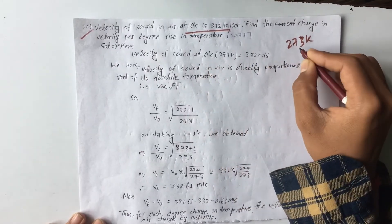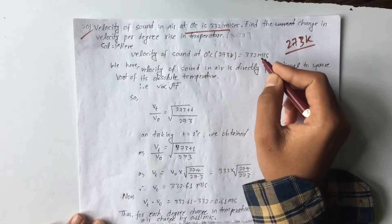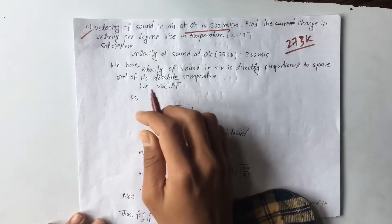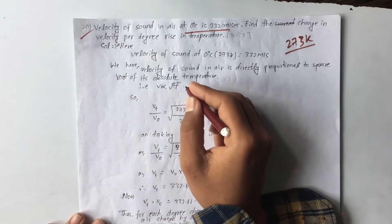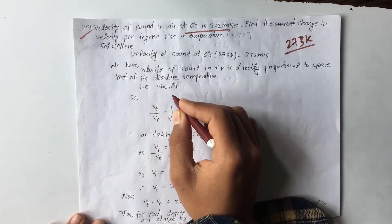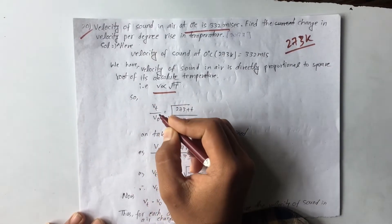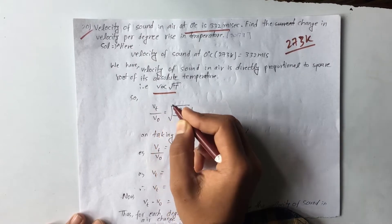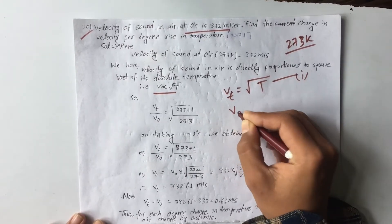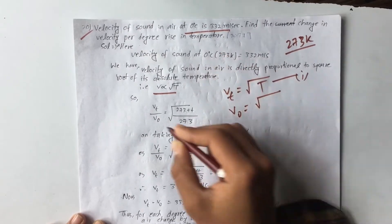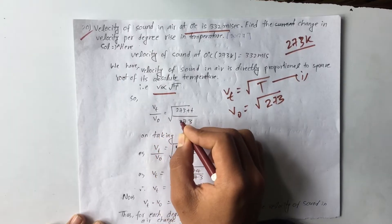We have the velocity of sound at 0 degrees Celsius as 332 meters per second. The velocity of sound in air is directly proportional to the square root of its absolute temperature. Since the constant is the same, the velocity is directly proportional to the square root of the absolute temperature.